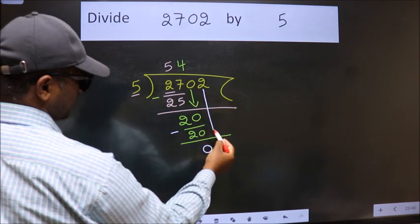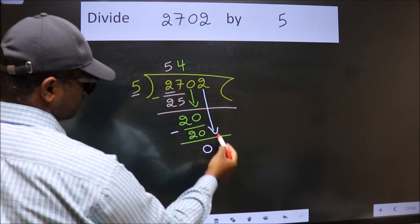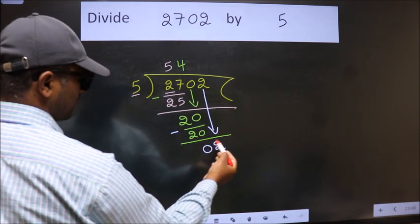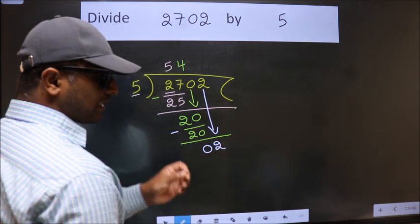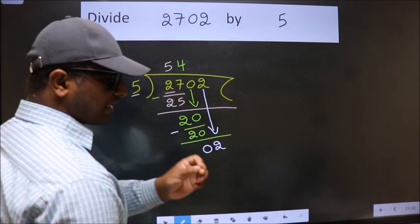After this, bring down the beside number. So 2 down. After this step, the mistake happens.